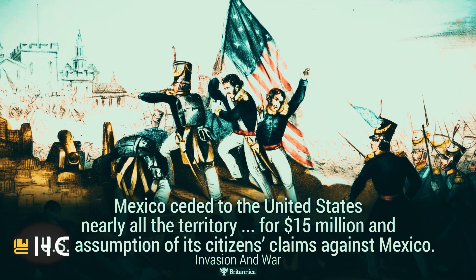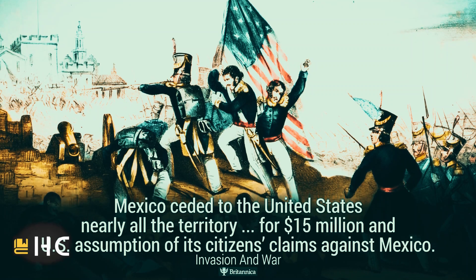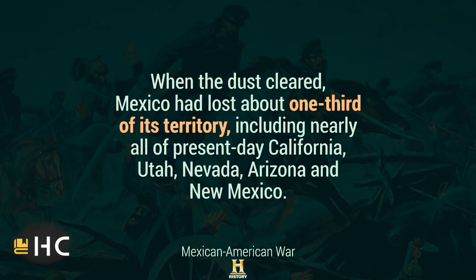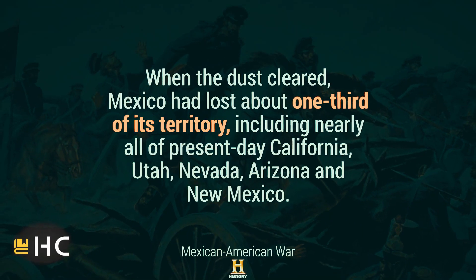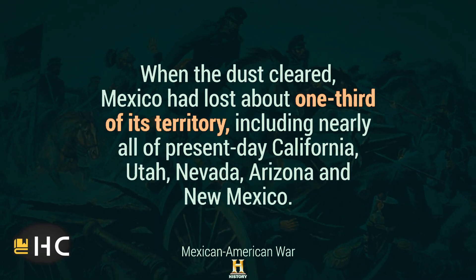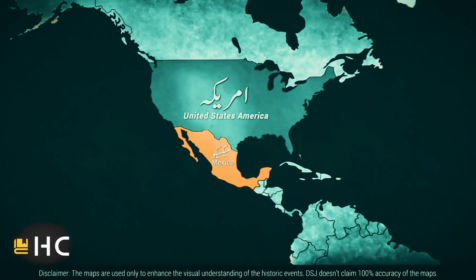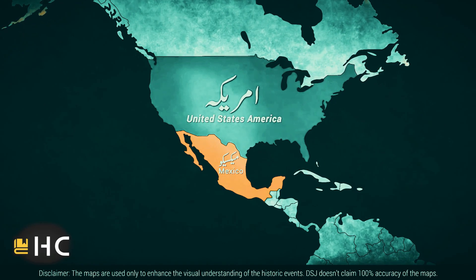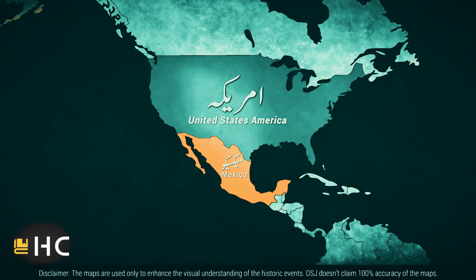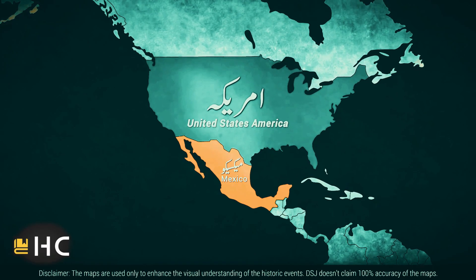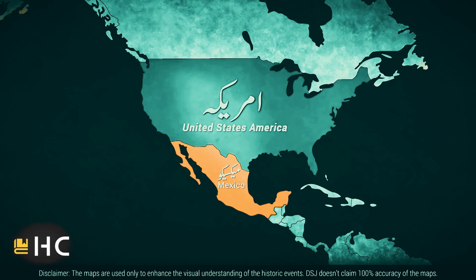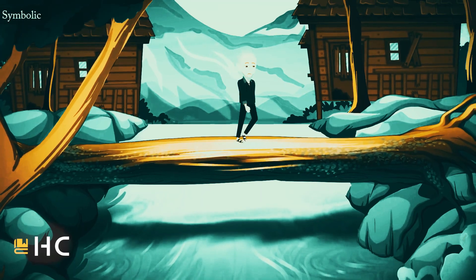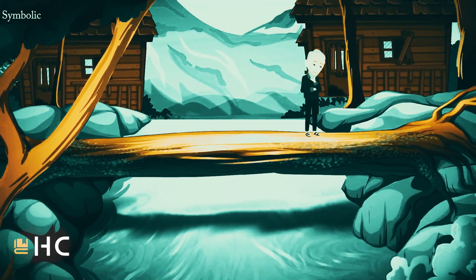Ironically, after the annexation, the United States paid $15 million to Mexico. America's first offer had been $13 million, but after losing the war Mexico was not in a position to demand more. The US returned some territory to Mexico, including its capital Mexico City, but deprived Mexico of one-third of its territory at gunpoint. A smaller Mexico was no longer a problem for the US. This was the successful plan of the American leaders that helped the United States become a superpower.